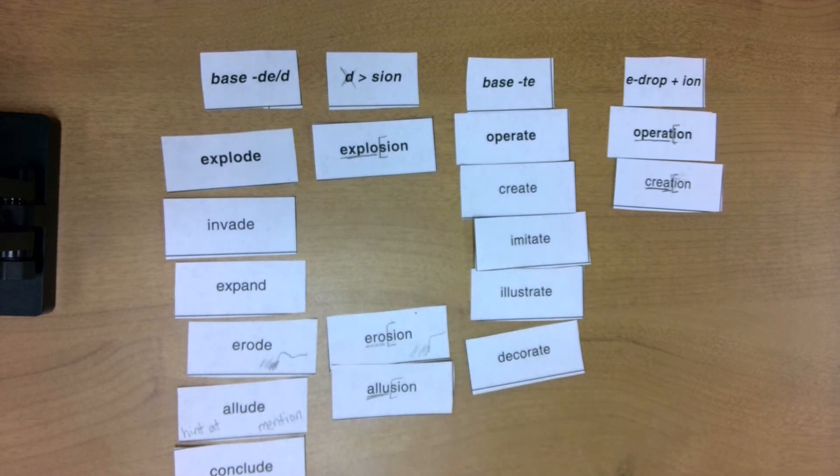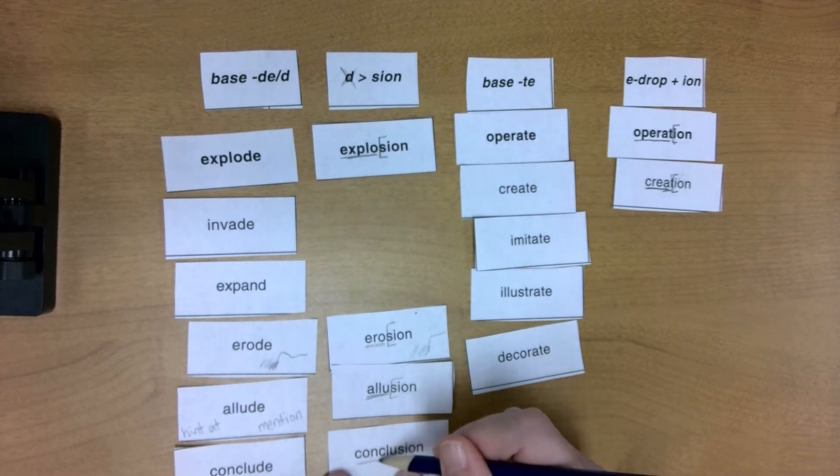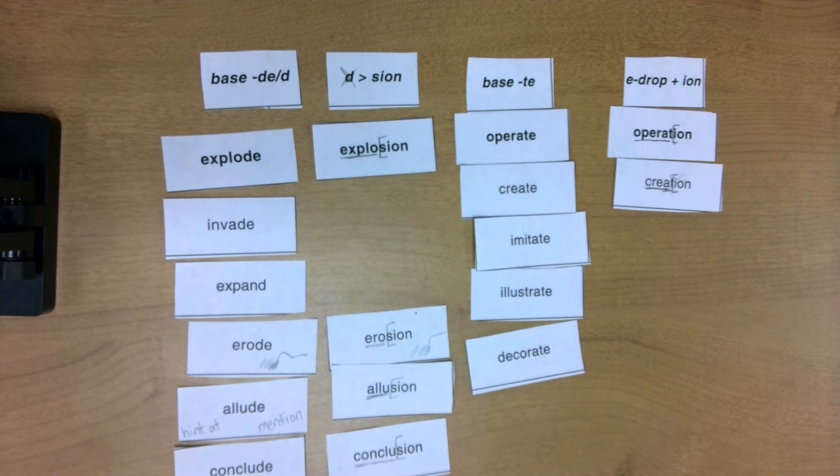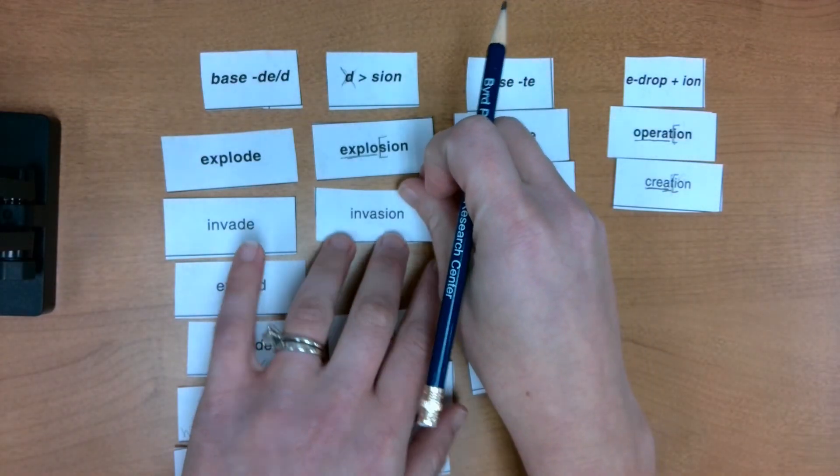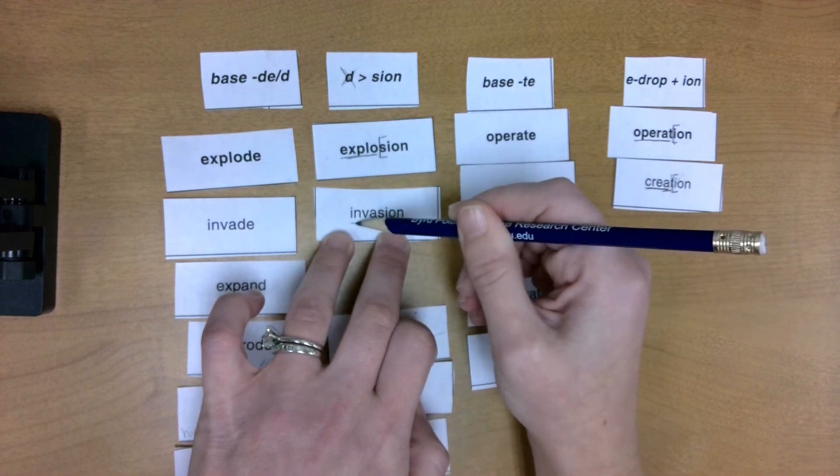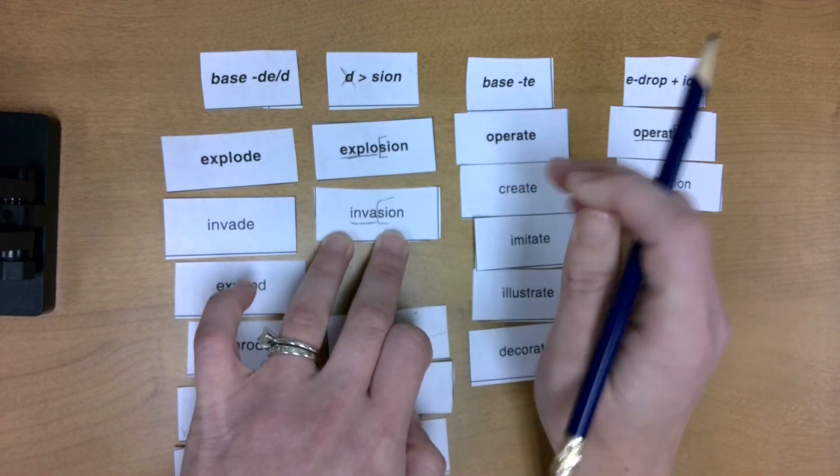I want to change to S-I-O-N. Conclusion. Same thing. Here's my base word conclude where that D-E was dropped for S-I-O-N. Invasion. Another D-E drop. I got S-I-O-N.